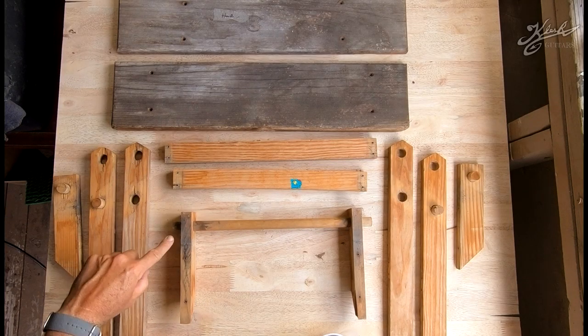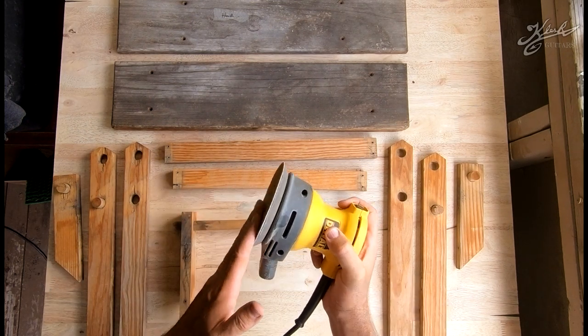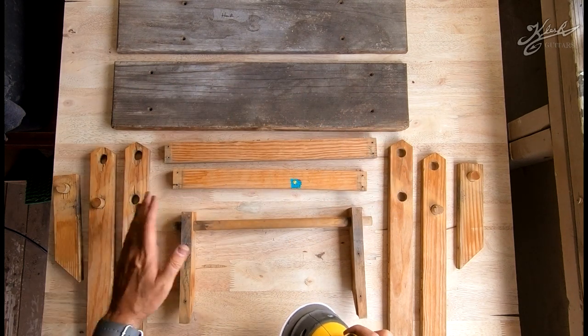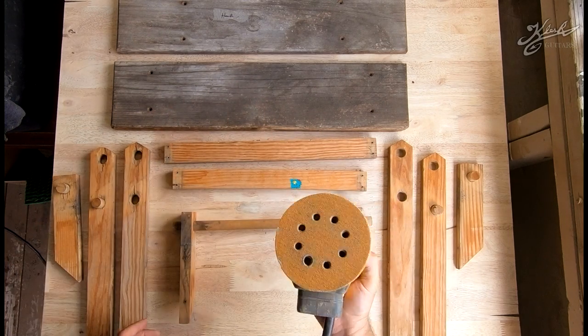All right, so I noticed that a lot of this stuff is really dirty, and I think I'm gonna go ahead and hit it with some 60 grit sandpaper real quick just to show all the cracks that need to be repaired. I need to see what needs to be repaired first, so let's go ahead and sand these down just roughly.